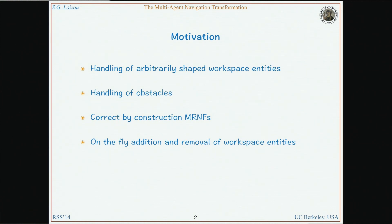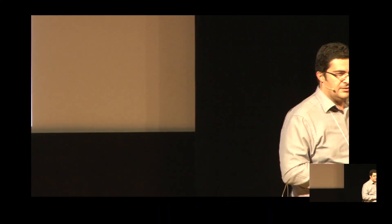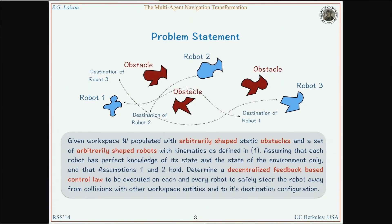With additional tuning, you are trying to make the local minima non-degenerate. This gives you a problem of adding and removing obstacles, and also you have to handle arbitrarily shaped workspace entities and obstacles. Up to now, in the literature, we have only seen disk-shaped objects. The problem we are tackling is to create decentralized feedback control laws for each arbitrarily shaped robot operating in a workspace with arbitrarily shaped obstacles and robots.